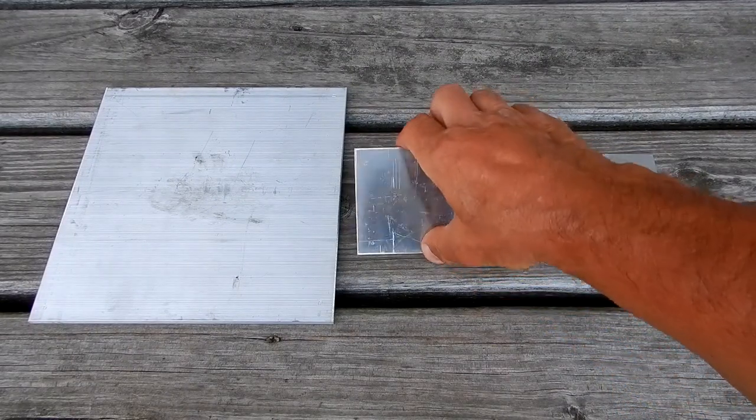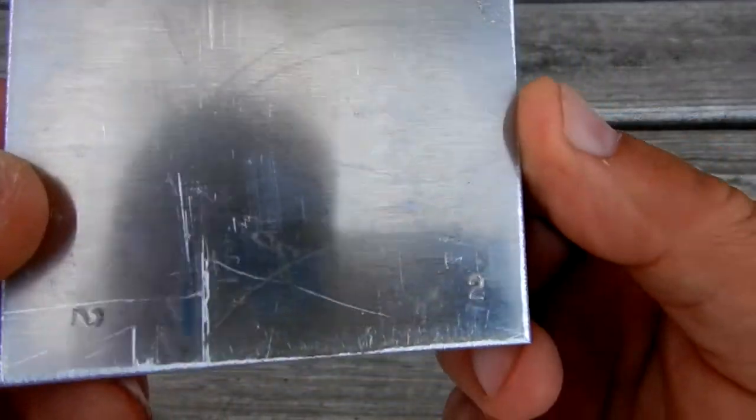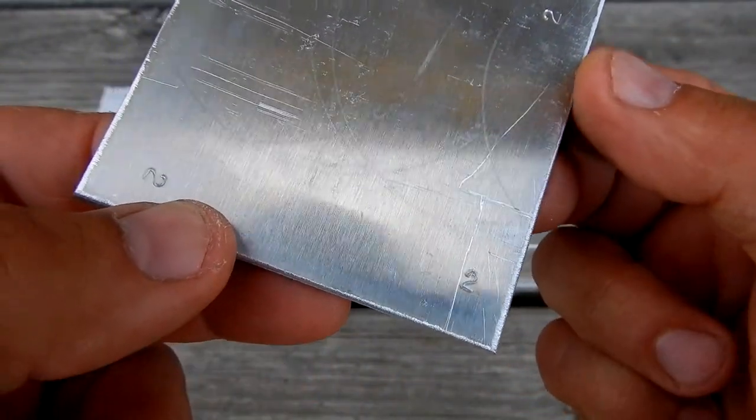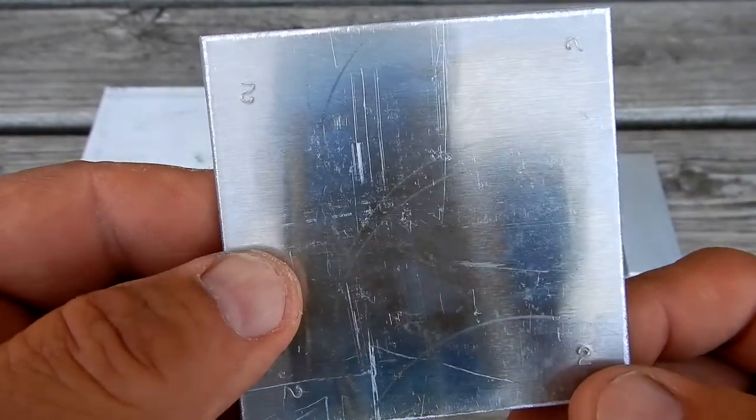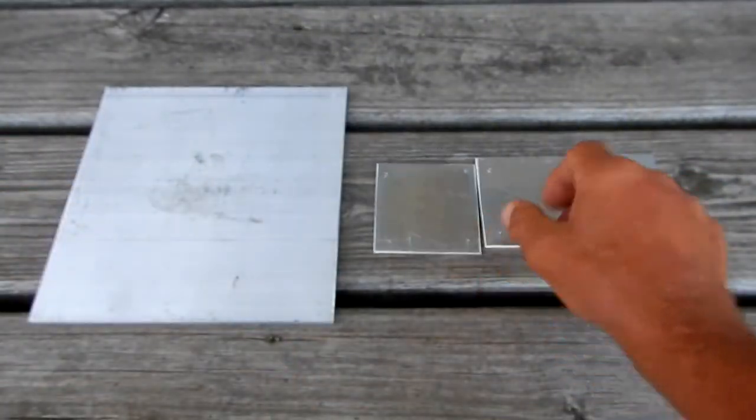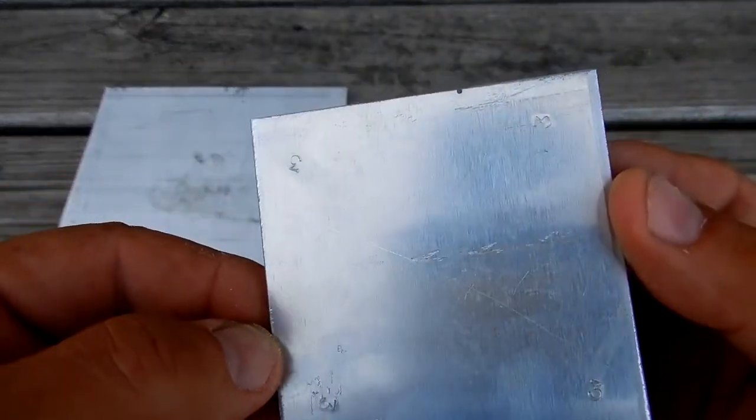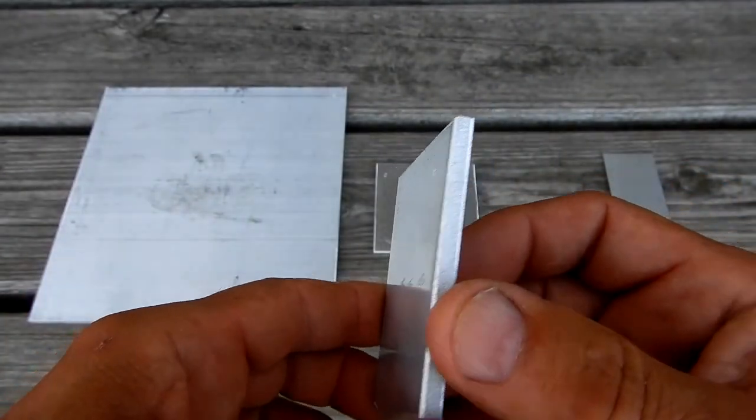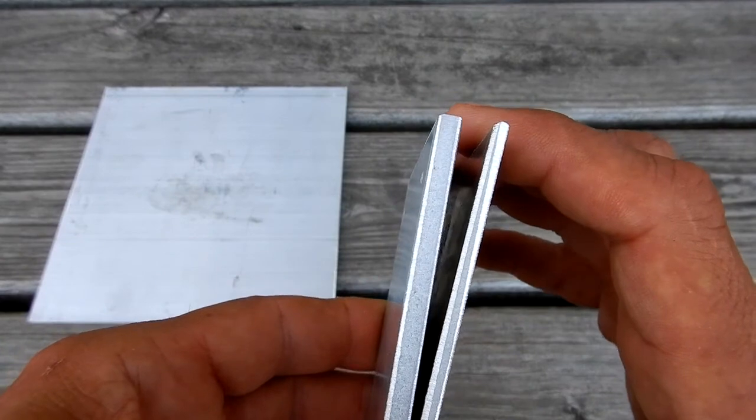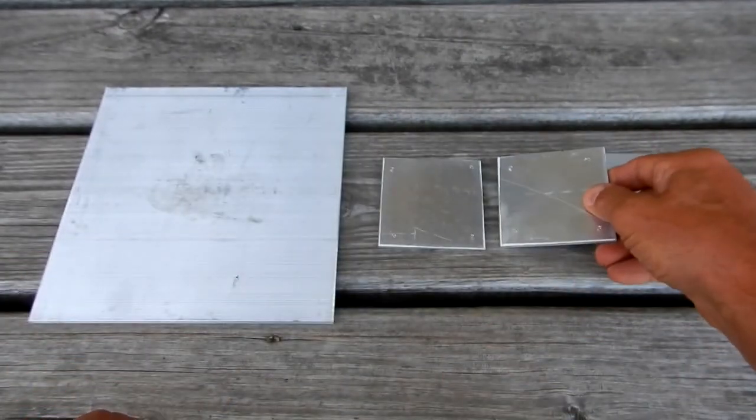I've stamped on each corner a two, and I've got nine of each of these sizes. The two stands for two sixteenths of an inch, which is one eighth. This one I have stamped a three in each corner, which is three sixteenths inch thick, just for quick identification.